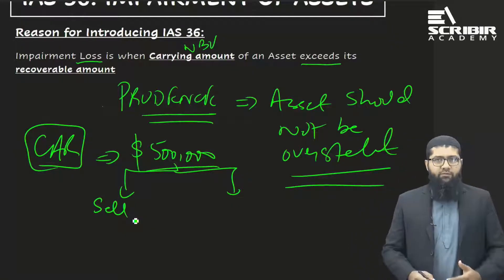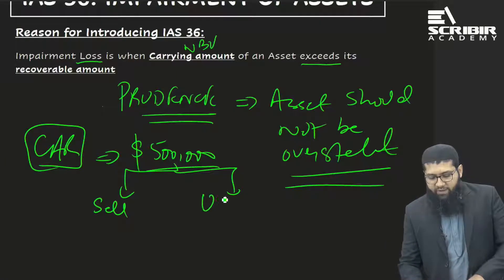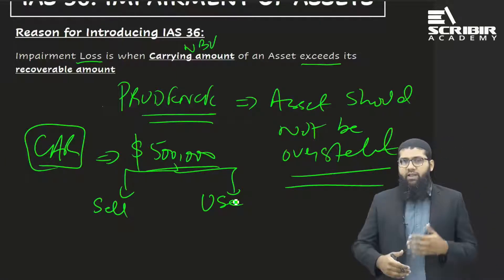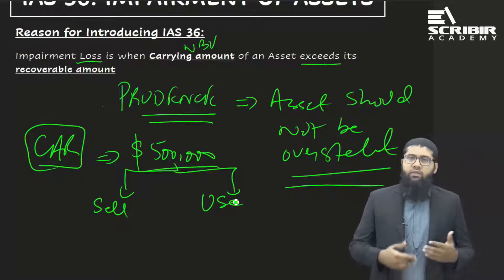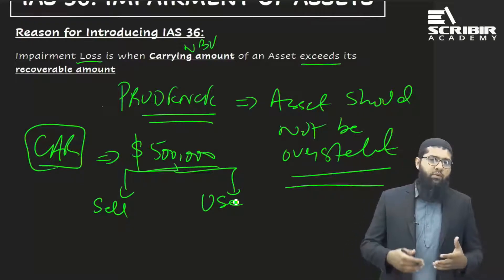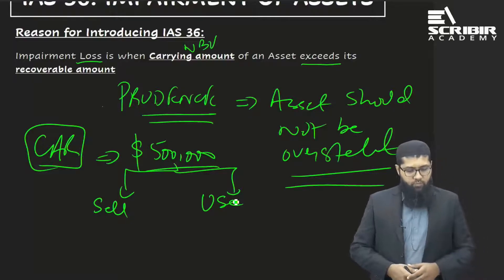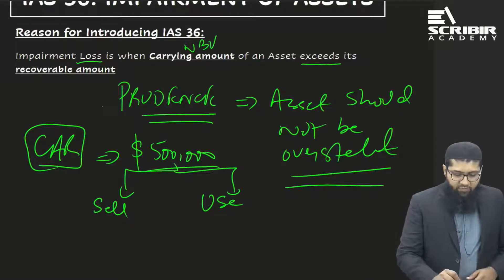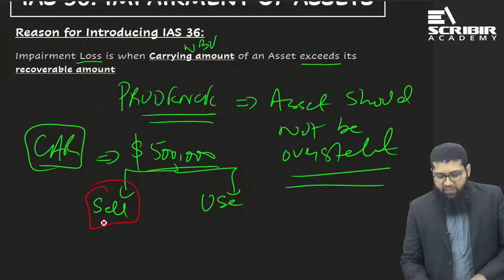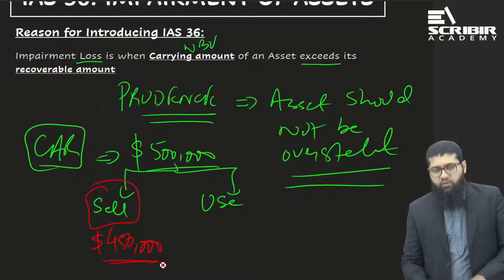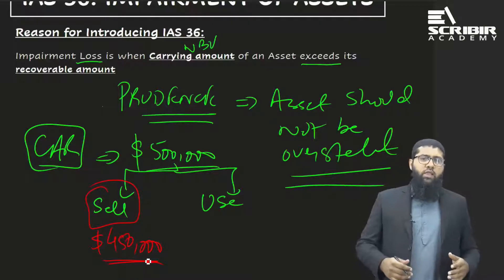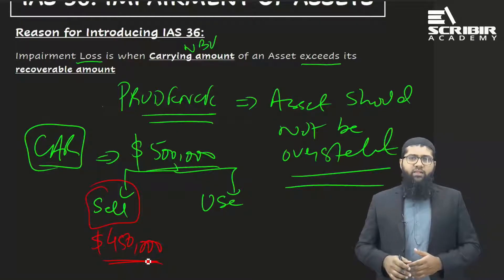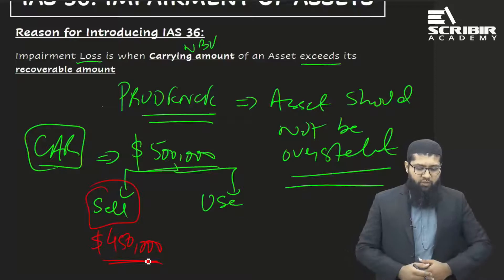The other way of recovering the cost is that you continue to use this car and derive benefits from it, so you will ultimately recover whatever cost was incurred. Now assume that if you sell this car right now, you will get four hundred and fifty thousand dollars — that is the maximum benefit from selling.